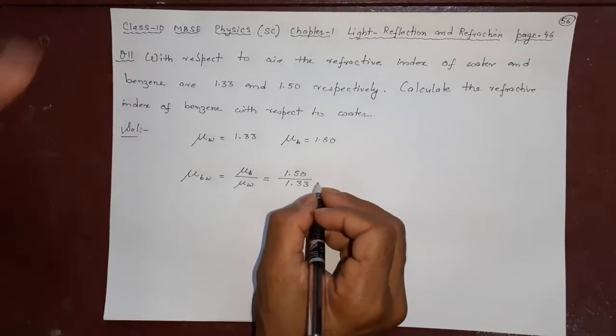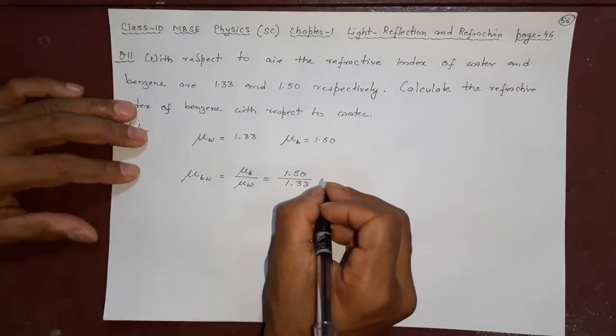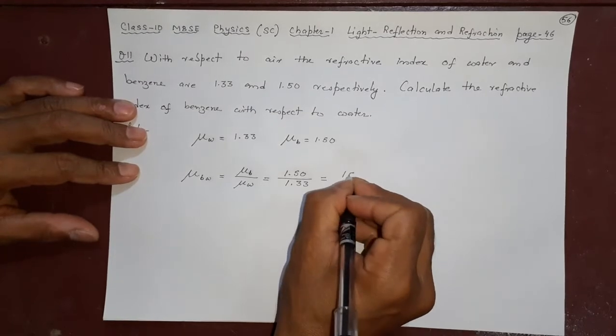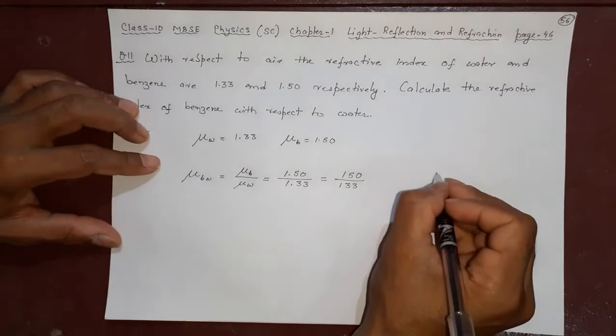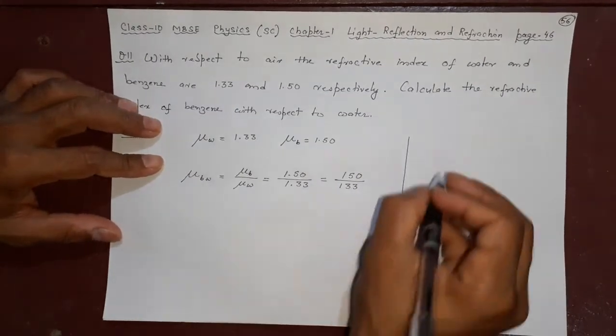Once you divide these two, you will get the answer: 1.50 divided by 1.33. You can do the rough calculation on the side.